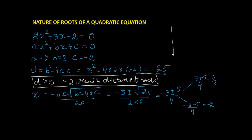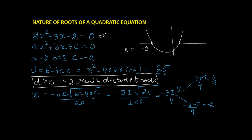Graphically, when we plot this curve, it intersects the x-axis at x = −2 and x = 1/2. These are the two real and distinct roots when the discriminant is greater than 0.